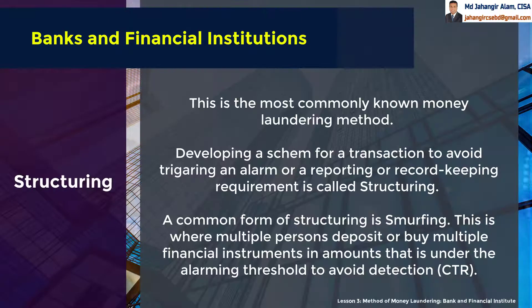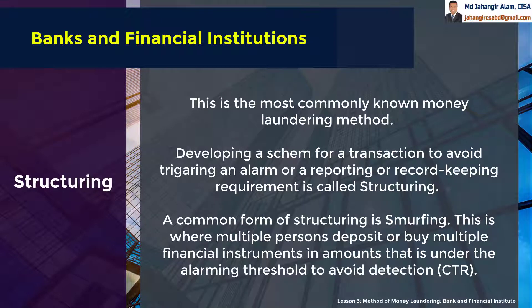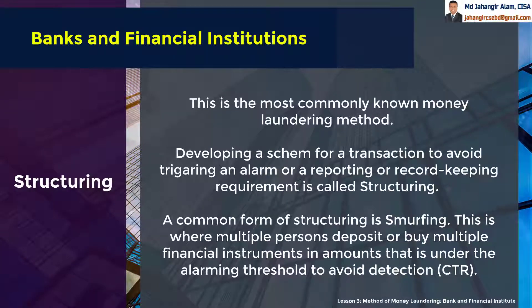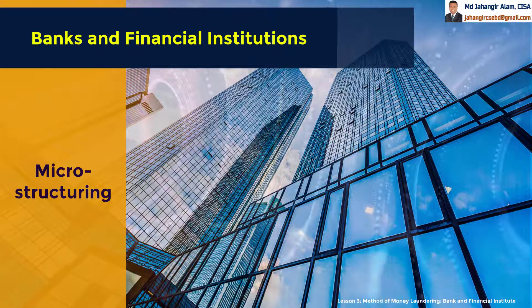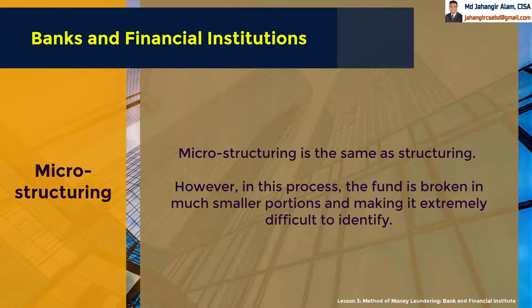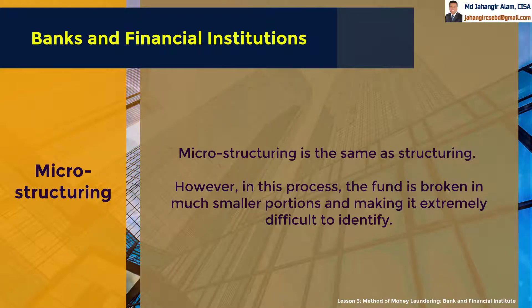Structuring is the most commonly known money laundering method. Developing a scheme for a transaction to avoid triggering an alarm or a reporting or record-keeping requirement is called structuring. A common form of structuring is smurfing, where multiple people deposit or buy multiple financial instruments in amounts that are under the alarm threshold to avoid detection. Microstructuring is the same as structuring; however, in this process the fund is broken into much smaller portions, making it extremely difficult to identify.